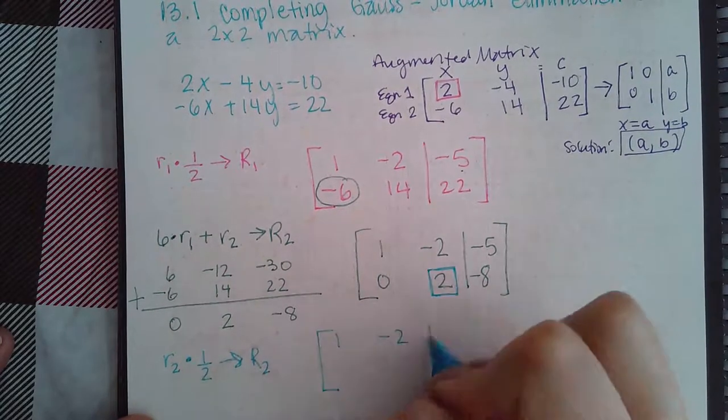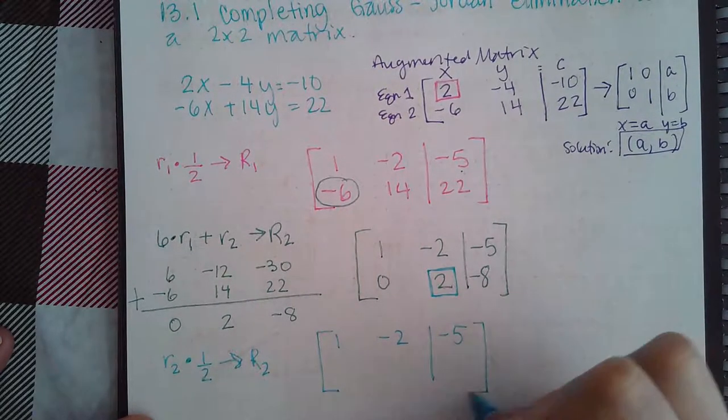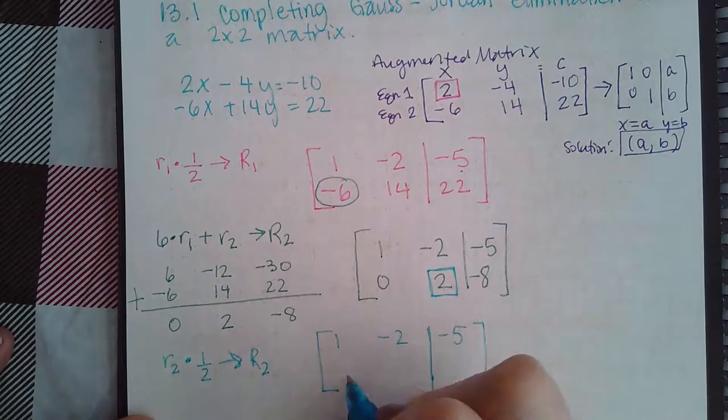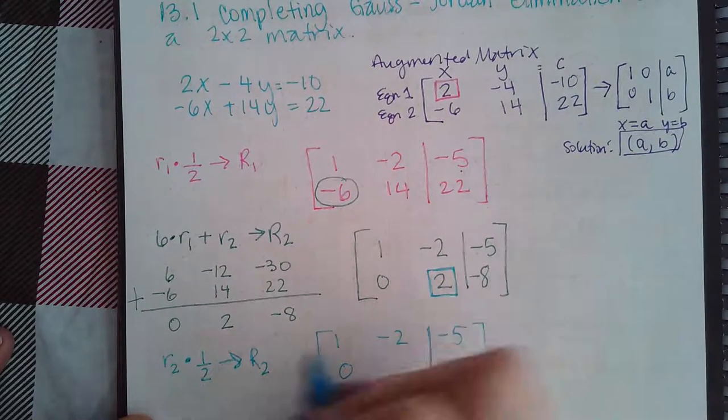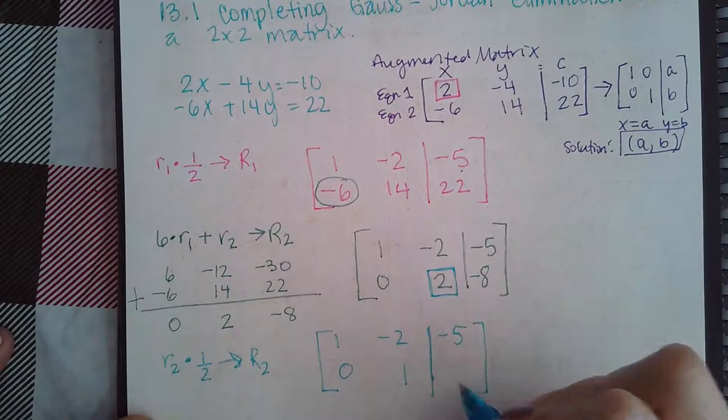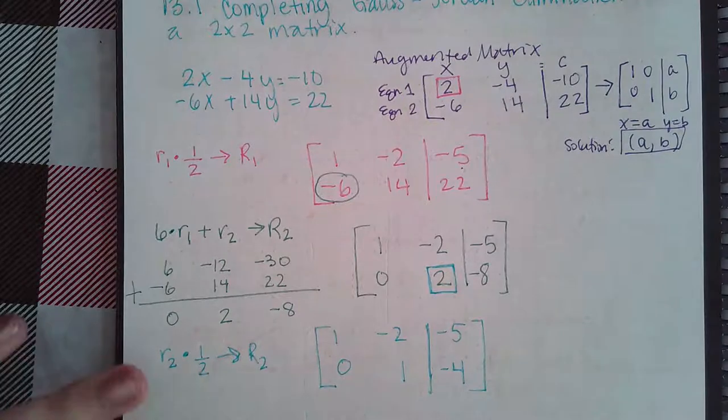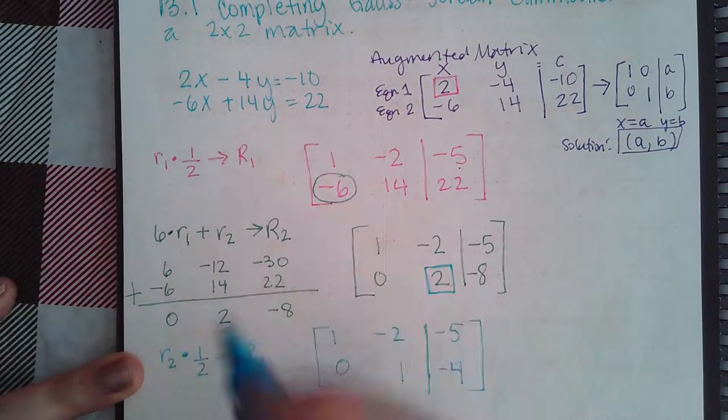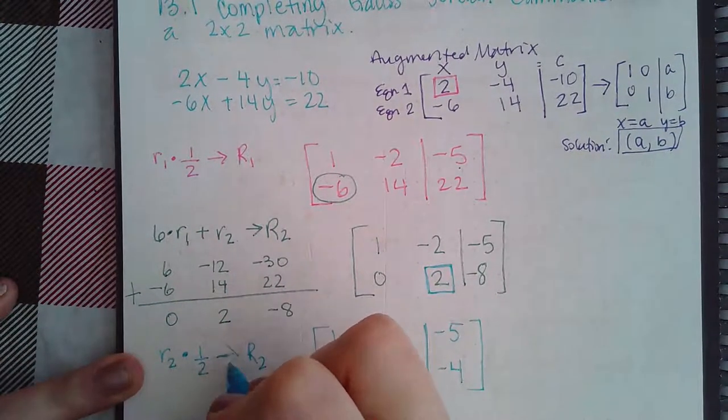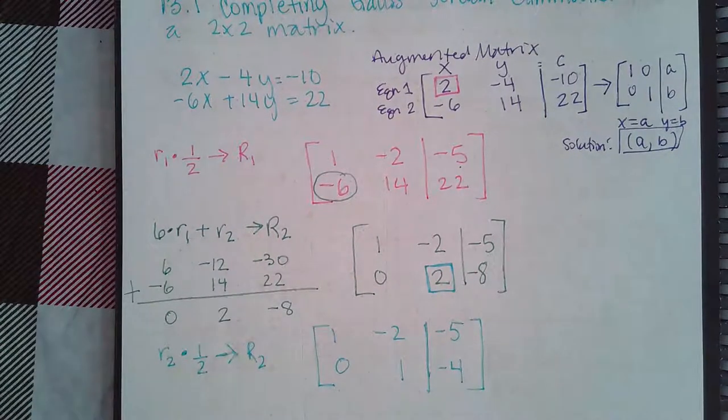So, row 1 will stay exactly the same. And 0 times 1 half is still 0. 2 times 1 half is 1. And negative 8 times 1 half is negative 4. I do the multiplication in my head. If you need to use the calculator, you can. You're more than welcome to use the calculator to find these values.